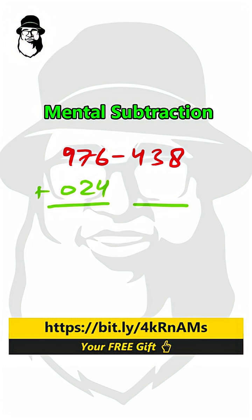And we are adding the same number. If this is 024, here also 024 we add. Now, this becomes 1000.